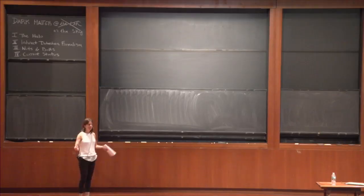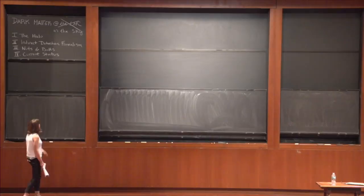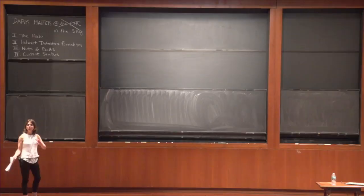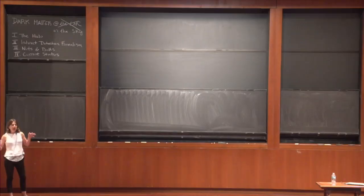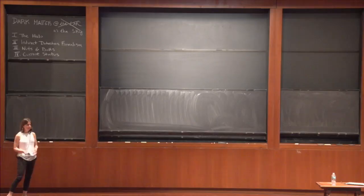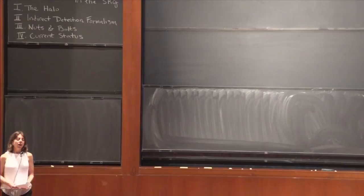Good afternoon everybody. It's great to be here. As Nima mentioned, I'm going to talk about indirect detection in my lecture today. This will not be about dark matter at the LHC, though I'm also very happy to discuss that - grab me afterwards or at any point if you want to chat more about that. In the hour and a half that we have, what I want to do is motivate how we set up problems when we ask: how do we search for dark matter in the sky? Both on the theory side, but also give you some of the nuts and bolts about what needs to be done when you actually sit down with a data set to do an analysis.